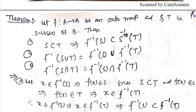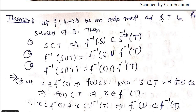Another important theorem, similar in type but using inverse images: let f: A→B be a mapping and let S, T be subsets of B. Then: (i) if S ⊆ T then f⁻¹(S) ⊆ f⁻¹(T); (ii) f⁻¹(S∪T) = f⁻¹(S)∪f⁻¹(T); (iii) f⁻¹(S∩T) = f⁻¹(S)∩f⁻¹(T). Note that here both the union and intersection satisfy equality. To prove (i): let x belong to f⁻¹(S); then f(x) belongs to S; since S ⊆ T, f(x) belongs to T; so x belongs to f⁻¹(T).